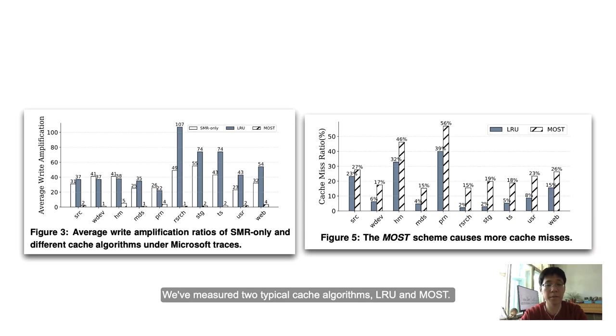We've measured two typical cache algorithms: LRU and MOST. LRU can increase the hit rate of the cache, but it may cause dozens of times of write amplification. MOST is specifically designed for write amplification. We could see that its amplification is relatively low, within 10 times. However, MOST does not consider cache popularity. Comparing with LRU, there are too many cache misses, which will cause more cache data to be written back to SMR, putting extra pressure on it. So it is hard to tell for cache popularity and write amplification which one is critical for overall performance.